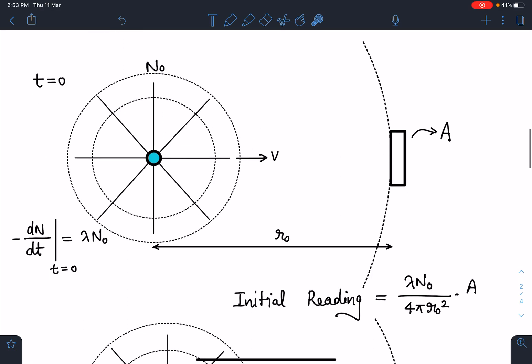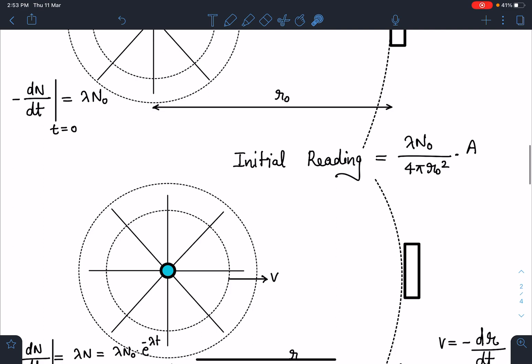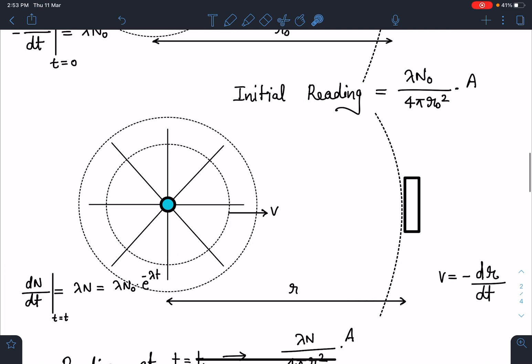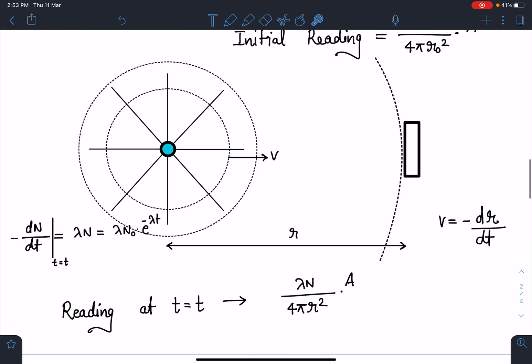Similarly, at any time T when this distance is R and the sample strength has become N. Now in this case I can write this minus dN by dt or activity at any time T I can write it as lambda N. Now this distance has become small r. So new recording here I can write lambda N by 4 pi R square times A by using the previous logic. And here velocity I can write as minus dr by dt.